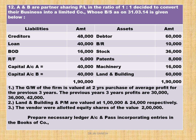From the balance sheet: creditors, loan, and BOD of 16,000 are external liabilities — these are transferred to the credit side of the realization account. Reserve fund is distributed to partners in profit sharing ratio. Capital accounts of A and B are 40,000 each, taken as balance brought down on the credit side. Assets — debtors, BR, stock, patent, machinery, and land and building — are all transferred to the debit side of the realization account.